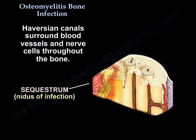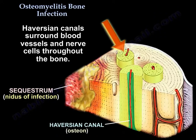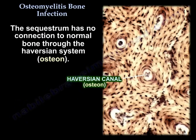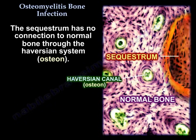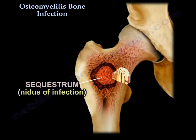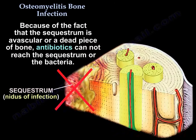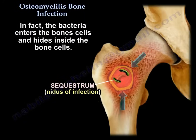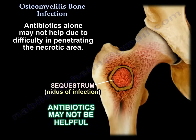Haversian canals surround blood vessels and nerve cells throughout the bone. The sequestrum has no connection to the normal bone through the Haversian system. Because this sequestrum is avascular, or a dead piece of bone, antibiotics cannot reach the sequestrum or the bacteria. In fact, the bacteria enters the bone cells and hides inside them. Antibiotics alone may not help due to difficulty in penetrating the necrotic area.